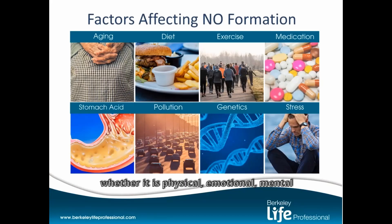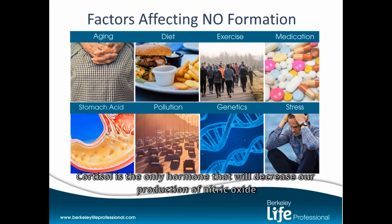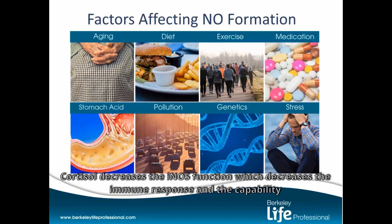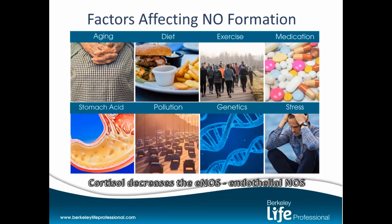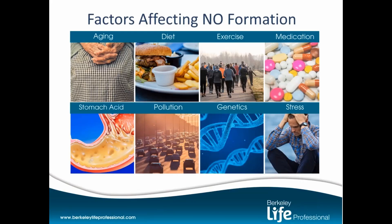Stress — whether physical, emotional, or mental — increases the production of the stress hormone cortisol. Cortisol is the only hormone that will decrease our production of nitric oxide. It decreases iNOS function, which decreases the immune response, and it decreases eNOS — the endothelial NOS — which governs circulation and microcirculation. Without optimal circulation, macrophages that need vitamin C and nitric oxide can't get in to do their job of defense, and debris can't be carried away.